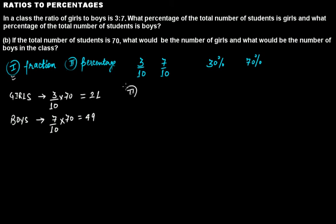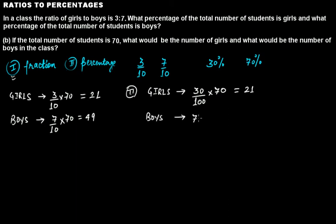The second way uses percentages. For girls, 30% of 70 students gives 21. For boys, 70% of 70 students gives 49. So using either fractions or percentages gives you the same result.